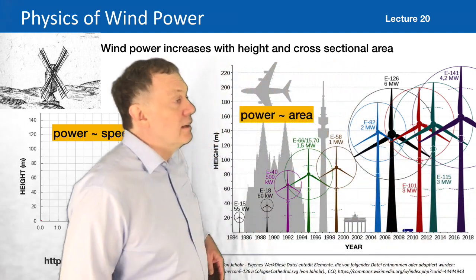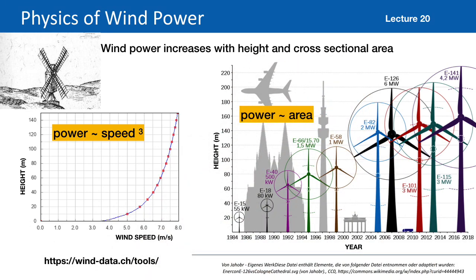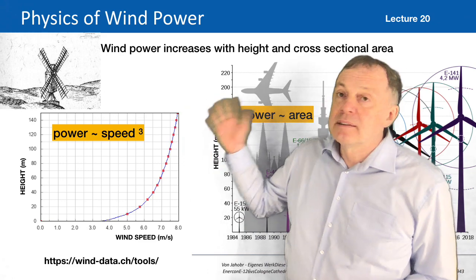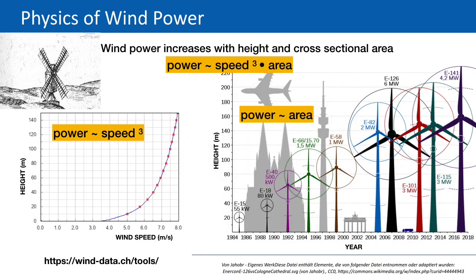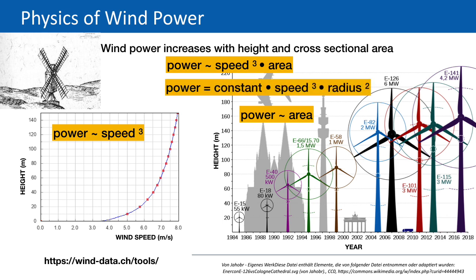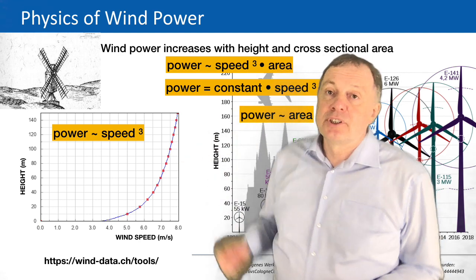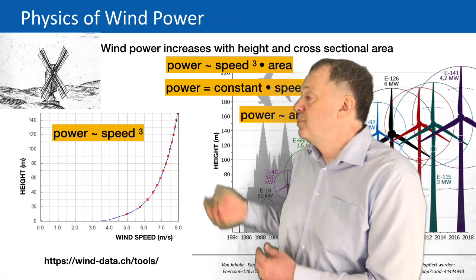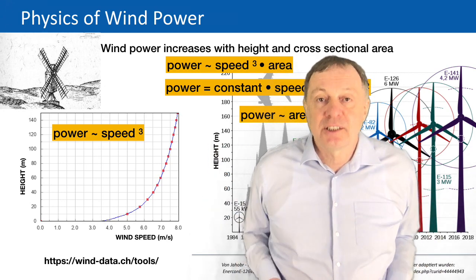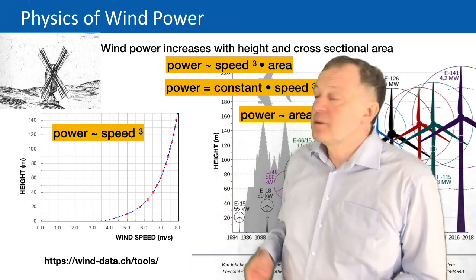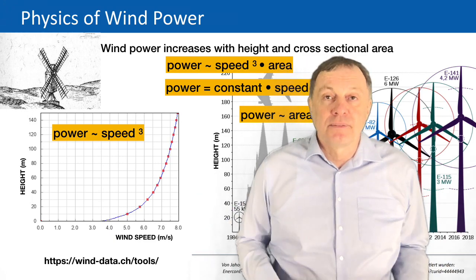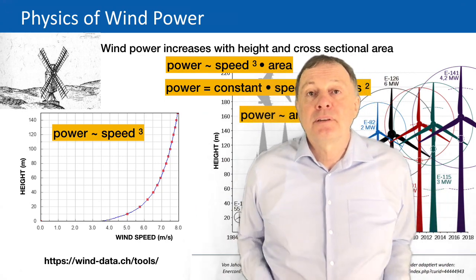The size of the rotors becomes bigger and bigger over the years because the bigger the blades are, the more wind power there is. Wind power increases with cross-sectional area, not just the radius. The cross-sectional area goes quadratically with the radius — area = π×R². So power is proportional to speed to the third power, and also proportional to the cross-sectional area of the blades.